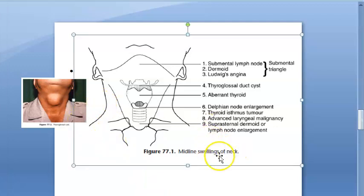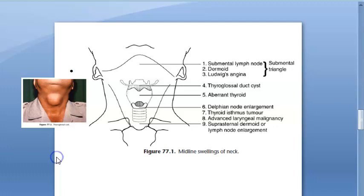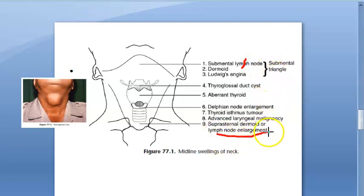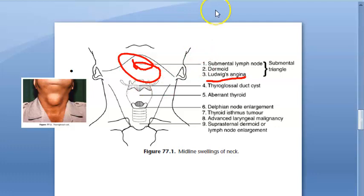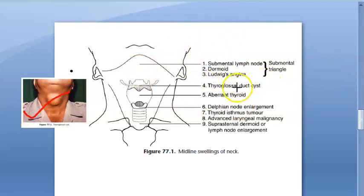If somebody asks you about midline neck swellings, it can be a submental lymph node — they have marked here and also noted some lymph node enlargement. It could be a submandibular space infection, like Ludwig's angina. Then there is the thyroglossal duct cyst, or it could be a thyroid cyst.